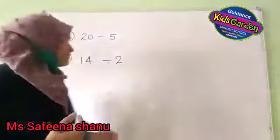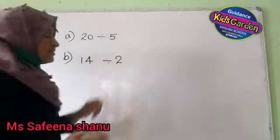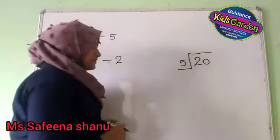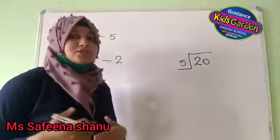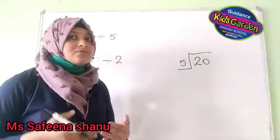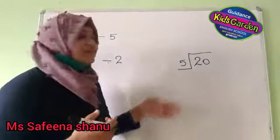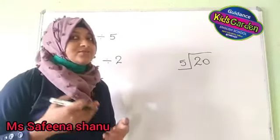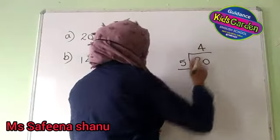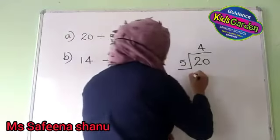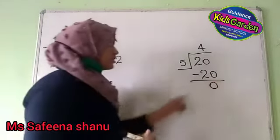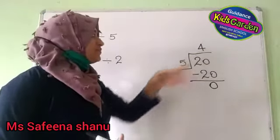Let us do some more examples. 20 divided by 5. Say the table of 5 till you reach 20: 1 five is 5, 2 fives are 10, 3 fives are 15, 4 fives are 20. 4 into 5 is equal to 20. 20 minus 20 is equal to 0. The quotient is 4.